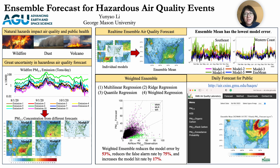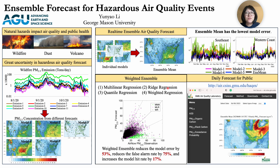So how to solve this problem? How to reduce the forecast uncertainty? Ensemble forecasting is increasingly used to reduce model uncertainties. I developed a real-time multi-model ensemble forecast system for hazardous air quality events. The ensemble forecast system combines the forecast result from five air quality models including NASA GEOS-5, NIL-NAS model, NOAA EPA-CMAQ model, HERS-MOG, and GFS model.